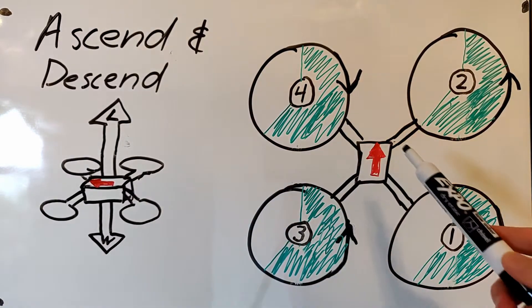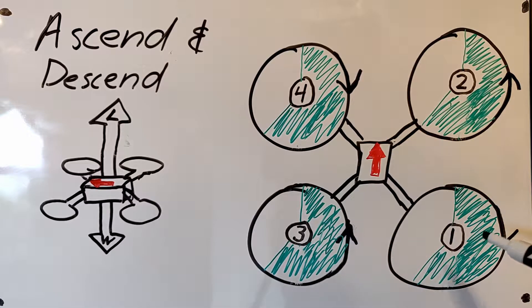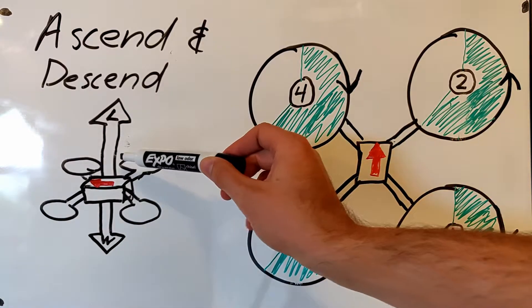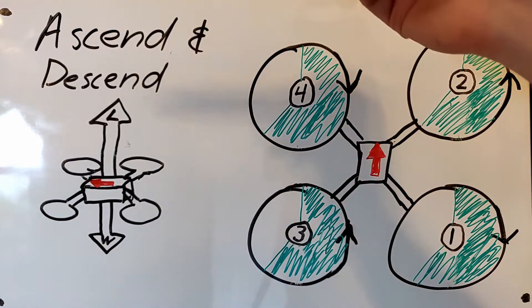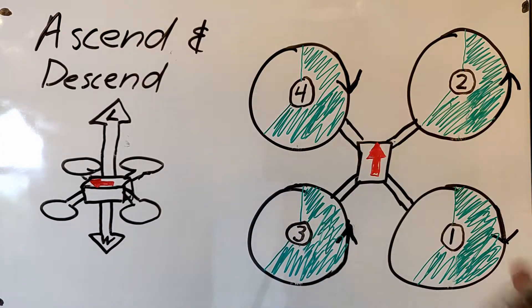To ascend you'll increase the throttle to all four motors equally. This will make the lift greater than the weight and the craft will rise into the air. To descend you'll do the opposite.